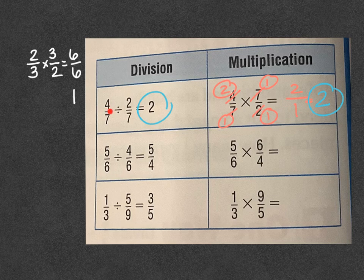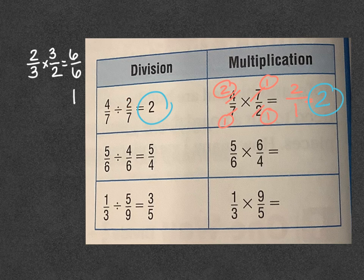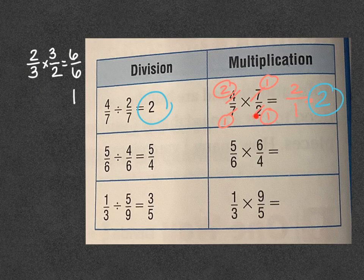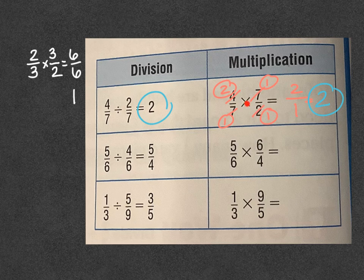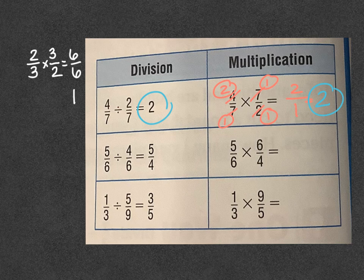I mean, keep in mind, we've got a division problem, 4 divided by 7, divided by a division problem, 2 divided by 7. And so we can use the magic of reciprocals, flip the second fraction on his head, his reciprocal, change that division to multiply, because we undid some division, so we can undo some division. And here we are with the same answer.